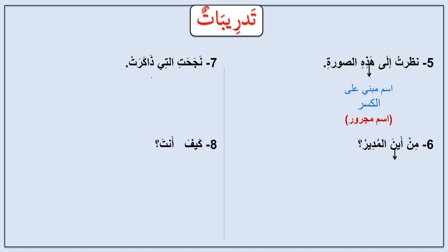Min ayna al-mudir? — The ism mabni is ayna, mabni 'ala al-fath, because it's an ism istifham. It comes after min, which is a harfu jar. I leave this example as homework: Najahati allati dhakarati — tell me what is the ism mabni, what it's mabni on, and its position in the sentence. Also: Kayfa anta? — these two words: tell me why they are mabni, what they are mabni on, and their position. That's the end of our lesson today. I hope it was useful inshallah. Please make du'a for me and my family. Assalamu alaikum.